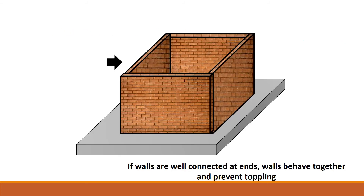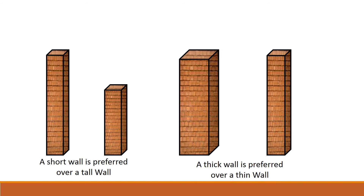A good response to earthquake loads is achieved when walls are interconnected. If all walls are interconnected at the ends, they behave together and there are least chances of walls toppling due to earthquakes. At the same time, wall height and wall thickness also decide behavior under earthquakes. A tall wall is not preferred compared to a short wall; a thicker wall is preferred over a thinner wall. This is all related to the slenderness and stiffness of the walls.